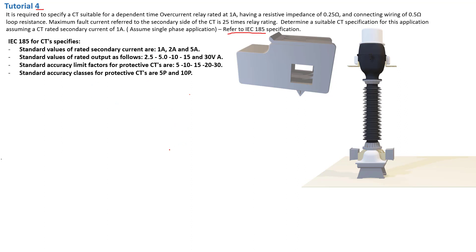We also have accuracy limit factors for protective CTs, which are between 5 and 30. The accuracy limit factor is the number that determines the magnitude of the current that can flow through the primary of the CT. For example, if we have 1,000 amps flowing on the primary and we take an accuracy limit factor of 10, that means 1,000 times 10 — that's how much current can flow through the primary before the CT reaches saturation.